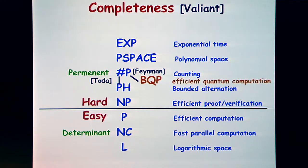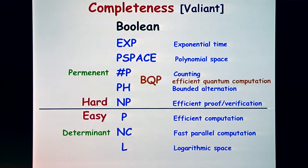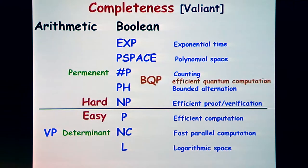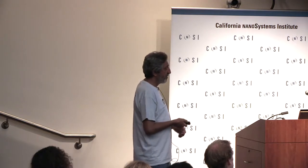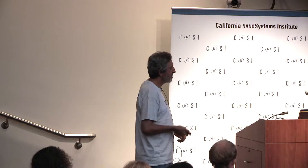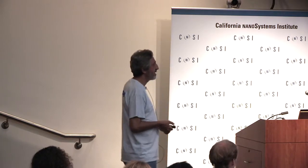These are just the Boolean complexity classes of discrete functions. When you think about arithmetic computation, these two polynomials are complete for the two analogs of P and NP: VP (Valiant's P) and VNP (Valiant's NP). I'm going to start with the arithmetic version, then go to the Boolean side, and do a few other things.